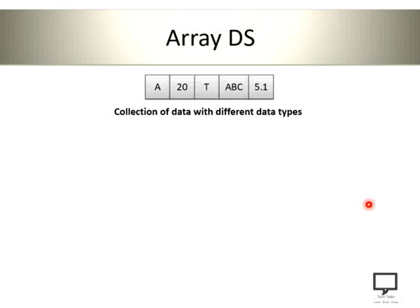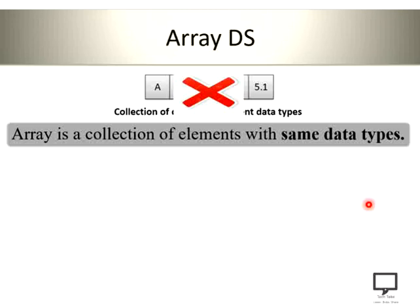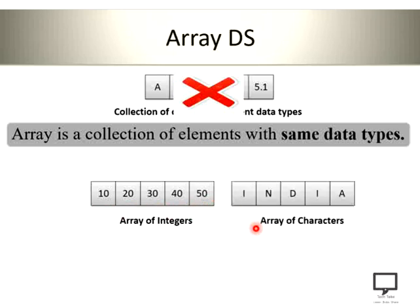Now let's see what an array is. Is an array a collection of data with different data types? No, that's totally wrong. An array is nothing but the collection of elements with the same data type. For example, an array of integers where all values are of type integer, or an array of characters where all elements are of type character. So if you want to form a collection of elements of the same data type, you use an array. The array elements are stored in memory in a continuous way.